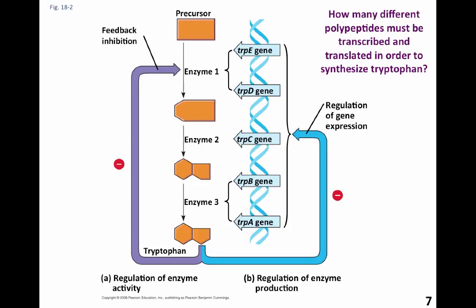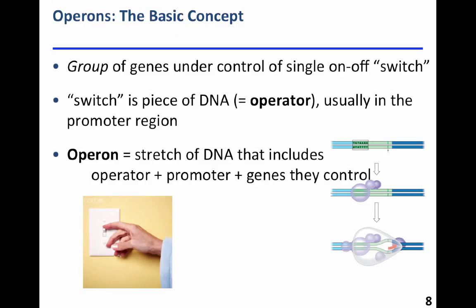How many different polypeptides have to be transcribed and translated in order to synthesize tryptophan? We have the TRP-E, TRP-D, TRP-C, TRP-B, and TRP-A genes — five different polypeptides that have to be transcribed to make three different functional proteins acting as enzymes. Wouldn't it be useful if all these genes could be triggered at one time? That's the basic concept of the operon: a group of genes all important in the same functional product, under the control of a single on-off switch.